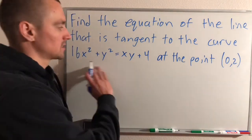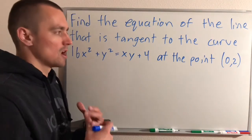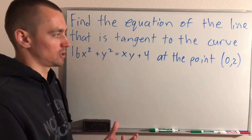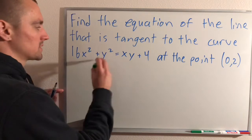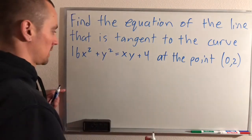So to do this, since we have our x's and y's all kind of mixed in together, we're going to have to apply implicit differentiation here. So all we're going to do is take the derivative of both sides of this equation with respect to x.